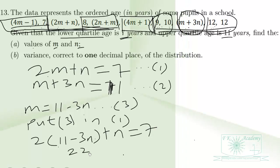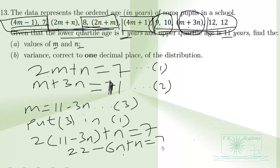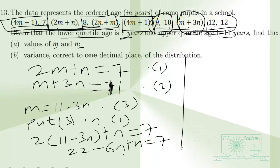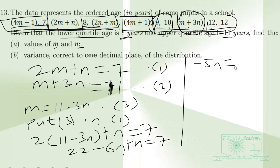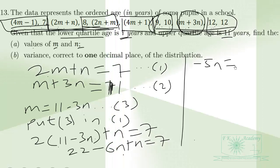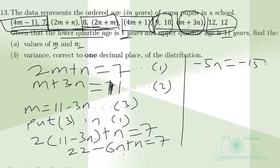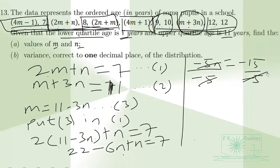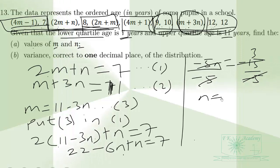Expanding: 22 − 6N + N = 7, so 22 − 5N = 7. Rearranging: −5N = 7 − 22, giving −5N = −15. Therefore the value of N is 3.